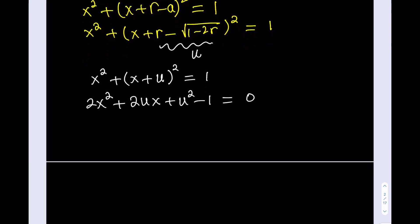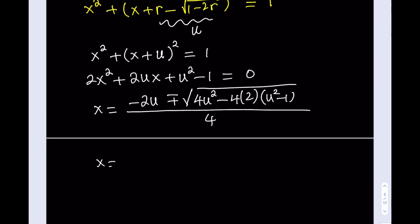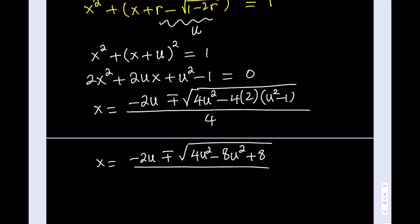Let's set up the quadratic formula. So x equals (−b ± √(b² − 4ac)) / 2a. Here b = −2u, so b² = 4u², and −4ac = −4·2·(u² − 1) = −8(u² − 1). The expression under the radical becomes 4u² − 8(u² − 1), which must be non-negative — otherwise we wouldn't have real solutions.